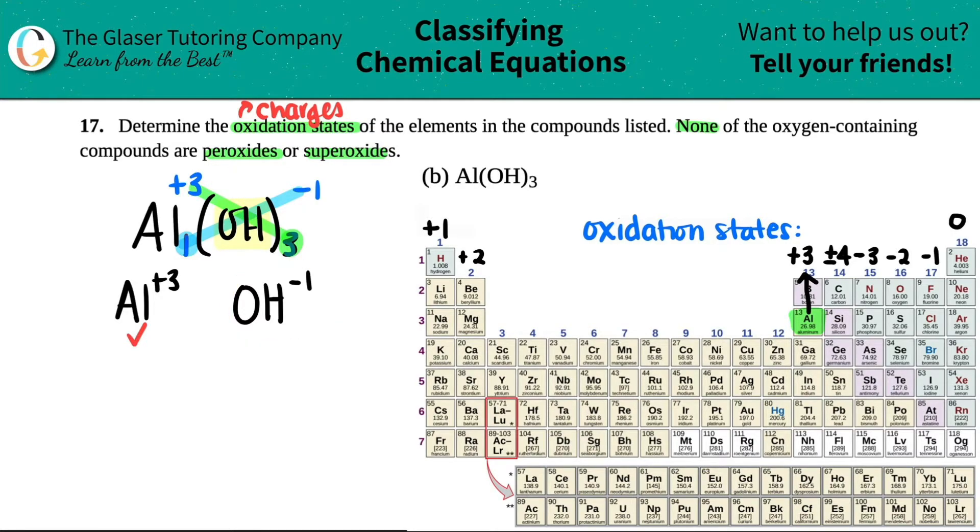Now for the OH. Now you can do this a couple of different ways. If you wanted to do it algebraically, you can, but they told us a little piece of information. They said that none of the oxygen containing compounds are peroxides or superoxides. So that means that if they're not those, oxygen will always have a negative two charge or oxidation state. So I already know what oxygen is. If it's not a peroxide or a superoxide, I know that oxygen would have an oxidation state of negative two.